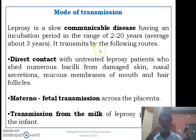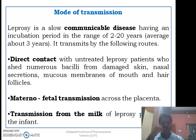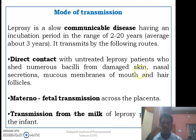The mode of transmission: leprosy is a communicable disease with an incubation period of two to twenty years, with an average of three years — no disease has a longer incubation period. The most common route of transmission is direct contact. Untreated leprosy patients shed bacilli through damaged skin, nasal secretions, mucous membranes, and hair follicles. Inhalation of these bacilli causes infection. Materno-fetal transmission occurs via the placenta, and bacteria are also shed through breast milk.